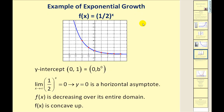Again, some of the key properties of this function: we have a y-intercept of zero-one. The limit as x approaches positive infinity is equal to zero, so we have a horizontal asymptote of y equals zero. It's decreasing over its entire domain, and it's concave up.